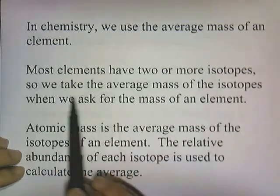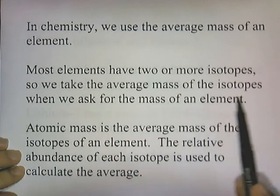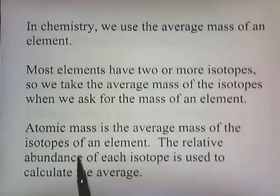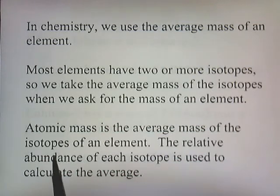Most elements have two or more isotopes, so we take the average mass of the isotopes when we ask for the mass of an element. Atomic mass is the average mass of the isotopes of an element, and the relative abundance of each isotope is used to calculate the average.